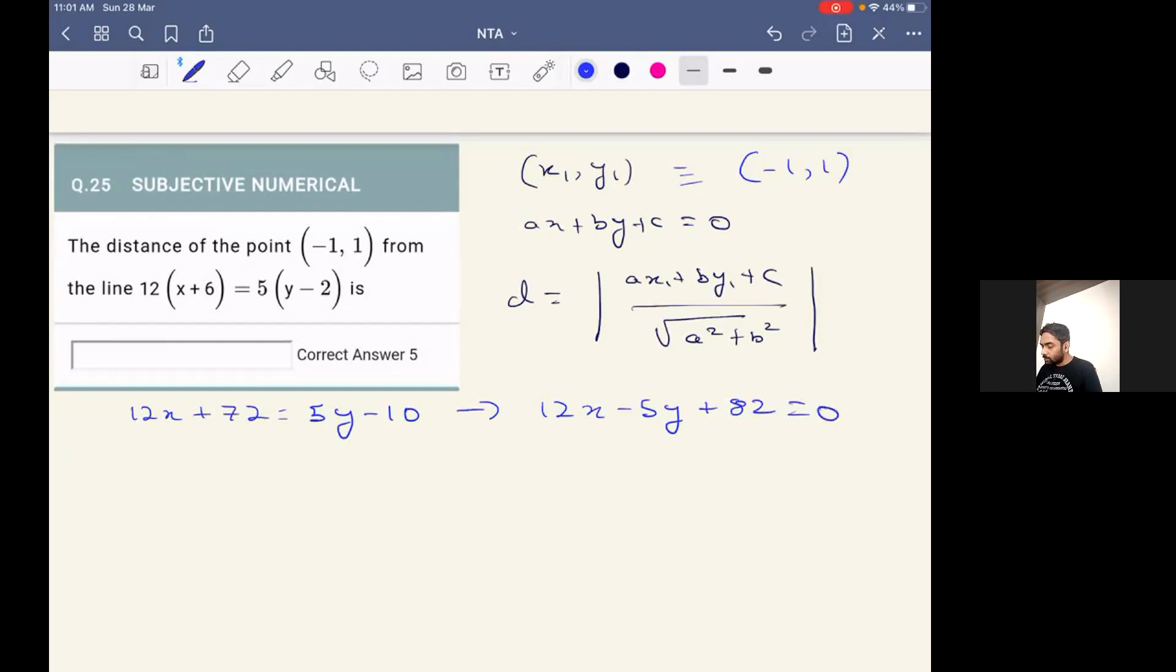So now substituting the values over here, the distance will come out to be mod of, we'll put the values, minus 12 minus 5 plus 82 by root over 144 plus 25.